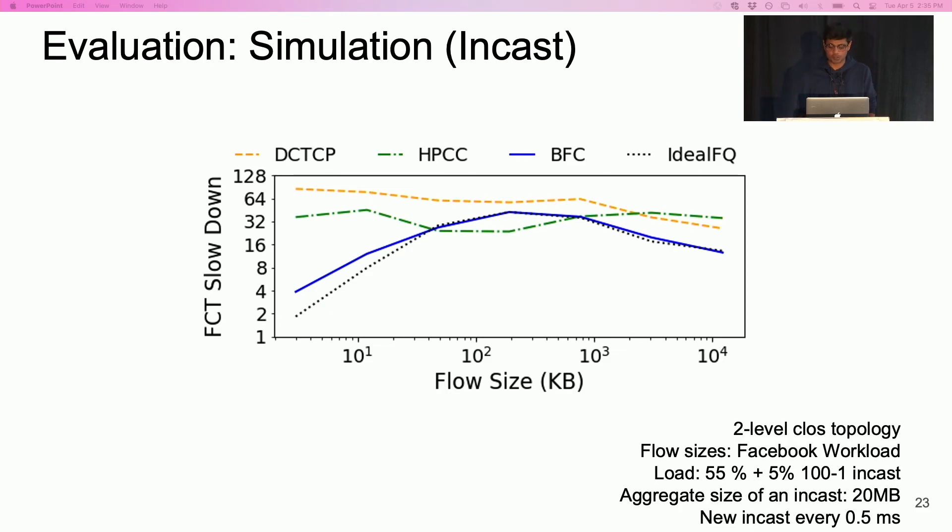Since BFC responds to congestion faster, it controls the buffer occupancy better, and there are no buffer overruns. Again, BFC outperforms both HPCC and DCTCP. However, unlike the previous experiment, BFC incurs collisions in this case, and there is some head of line blocking.